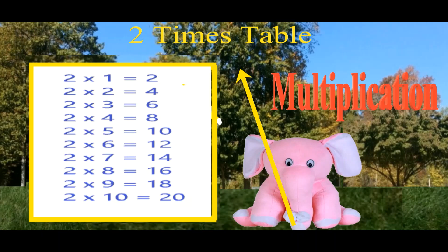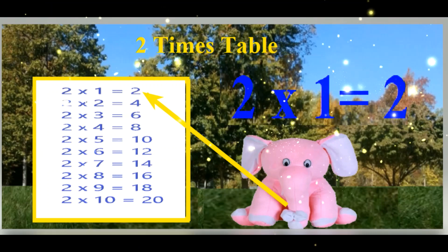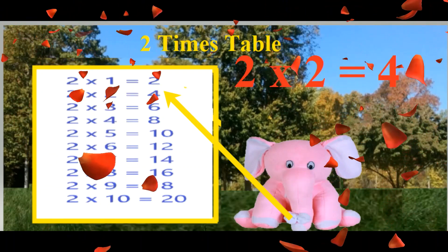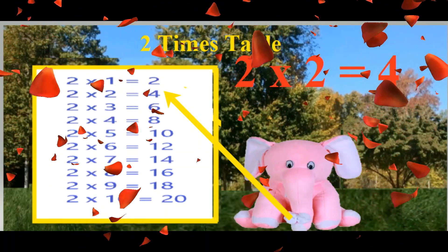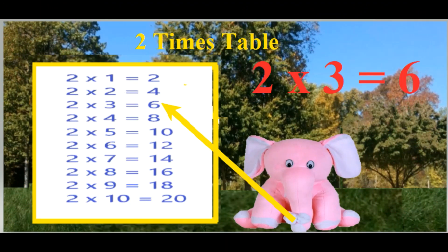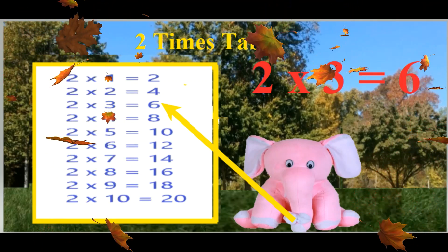2 table. 2 1's are 2. 2 2's are 4. 2 3's are 6.